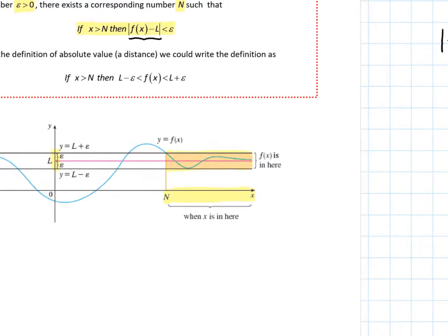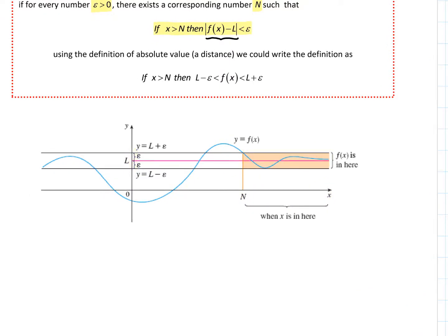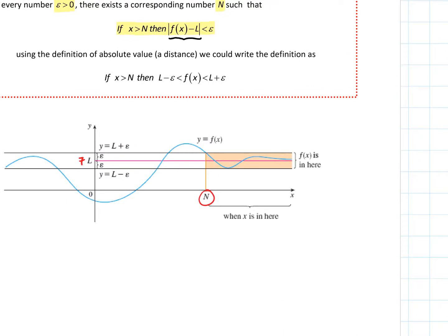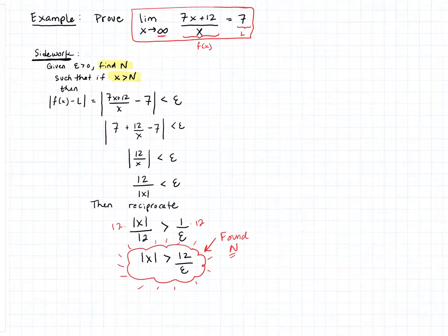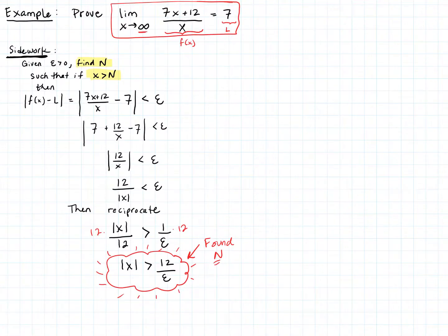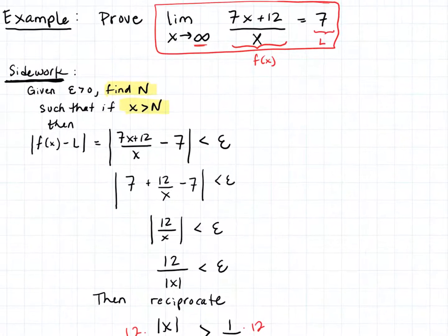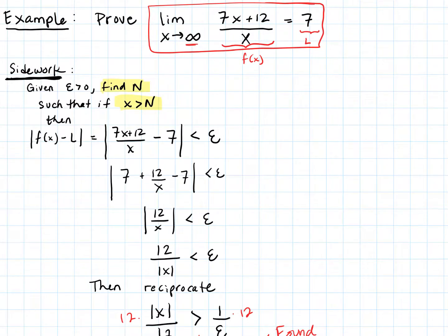Going back to the visual: we have our limit value 7, and given any epsilon, as long as we pick N = 12/epsilon, all x values greater than N will have their f(x) output values guaranteed to be within one epsilon of 7. Now let's formalize the proof. The side work and the proof look similar, but the key difference is that in the proof we will not assume what we want to prove — we will actually prove it.